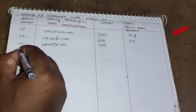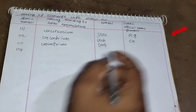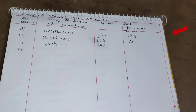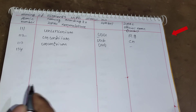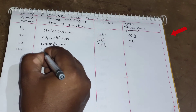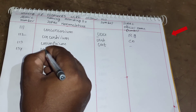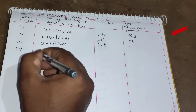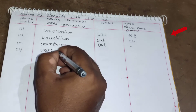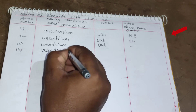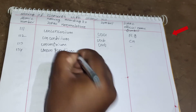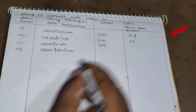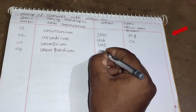For element 114: 1 = un, 1 = un, 4 = quad, plus '-ium' gives Ununquadium. The symbol is Uuq.